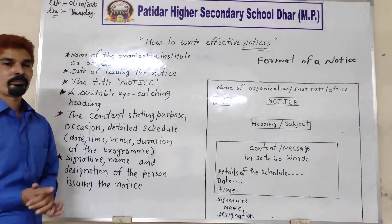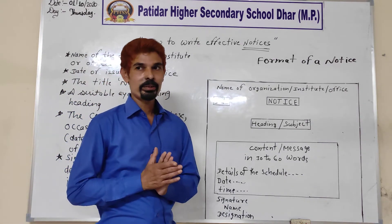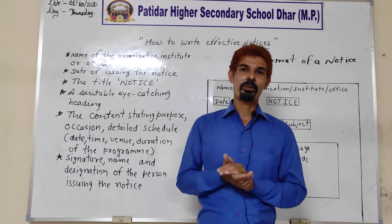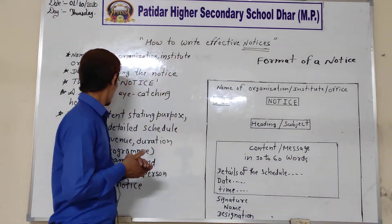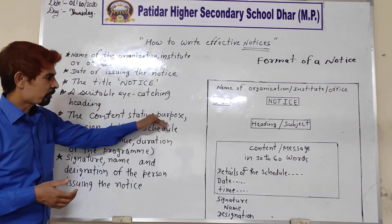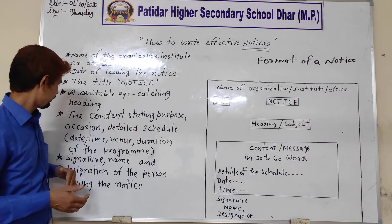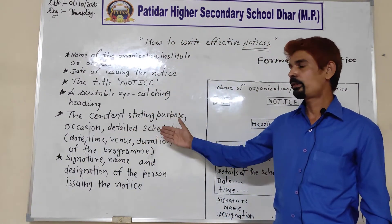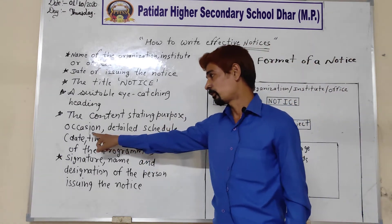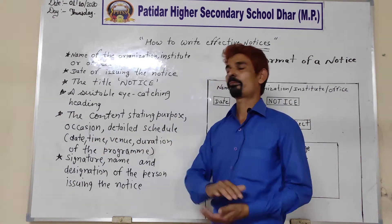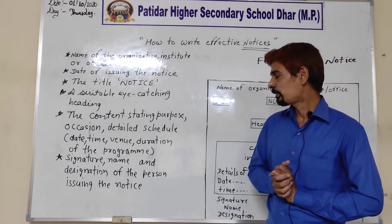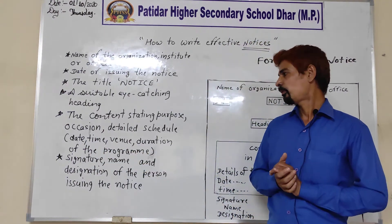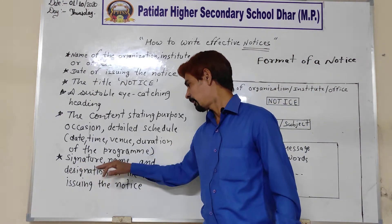Fourth point is a suitable, eye-catching heading. ऐसा heading या subject होना चाहिए जो eye-catching हो — जो तुरंत समझ में आ जाए, कि किस चीज़ का program है. Fifth: the content, stating purpose, occasion, and detailed schedule. उस content का purpose और उद्देश्य लिखना है, occasion लिखना है, साथ ही detailed schedule — जिसमें date, time, venue यानी place, और duration आएगी. Then, signature, name, and designation.